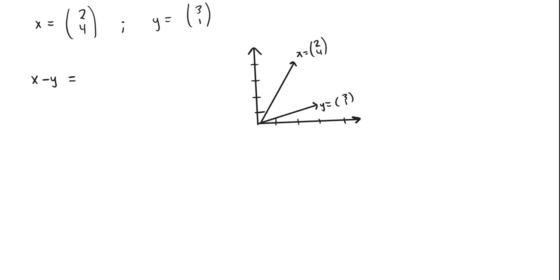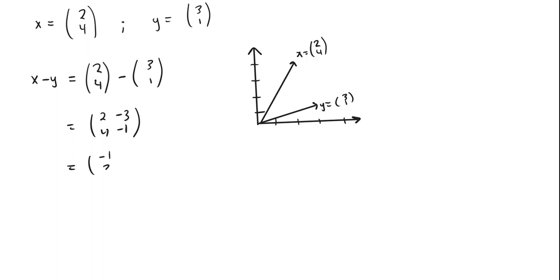If we calculate the distance vector x minus y, that's (2, 4) minus (3, 1), giving us (2 minus 3, 4 minus 1), which is (-1, 3). So x minus y equals (-1, 3). Starting at the tip of y, going negative 1 in the x direction and up 3 in the y direction, drawing an arrow to the tip of x — this vector is x minus y.